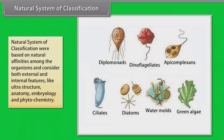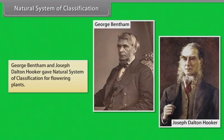Natural system of classification were based on natural affinities among the organisms and consider both external and internal features like ultra structure, anatomy, embryology, and phytochemistry. George Bentham and Joseph Dalton Hooker gave natural system of classification for flowering plants.